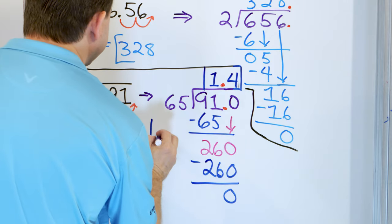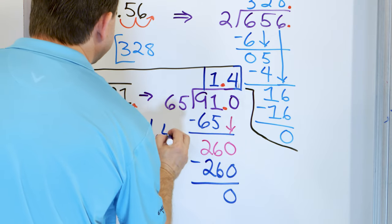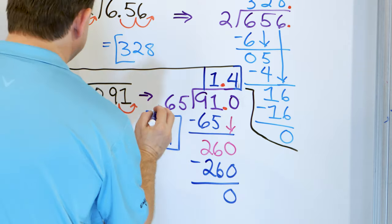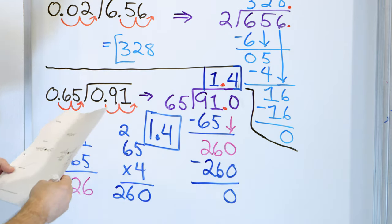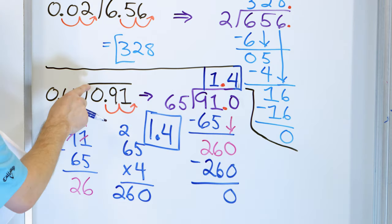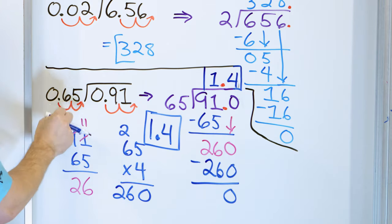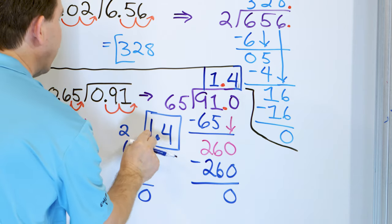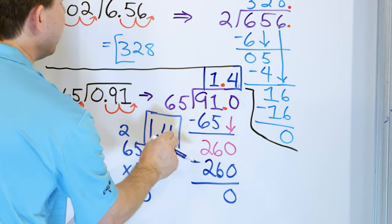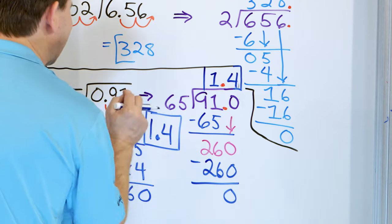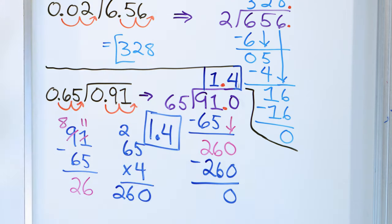The answer is 1.4 for this problem. So if we take 0.91 and divide it by 0.65, it can go one whole time, almost one and a half times — a little bit less than one and a half times.